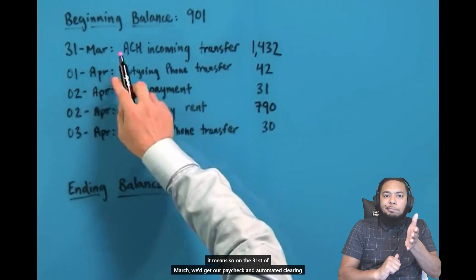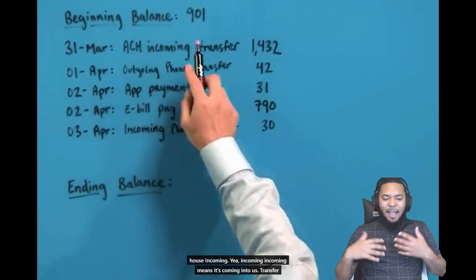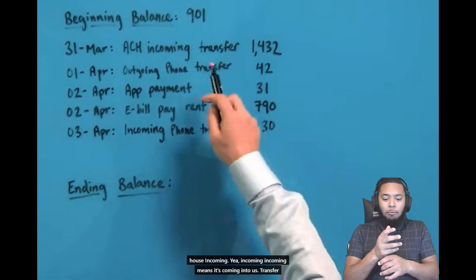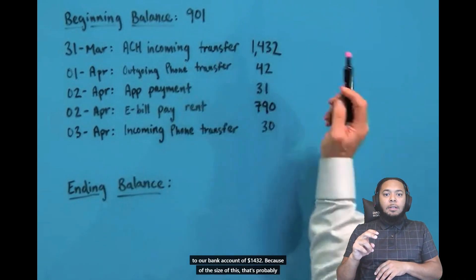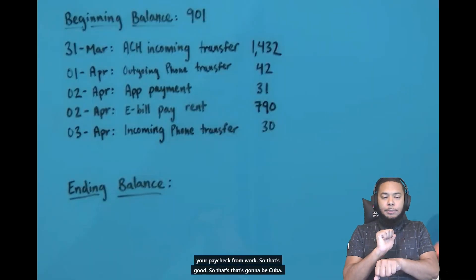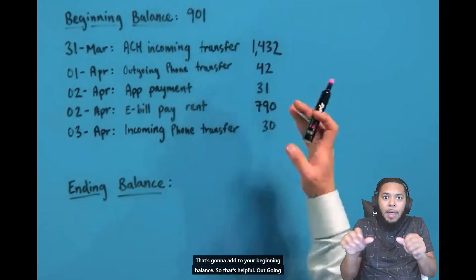So on the 31st of March, we get our paycheck and automated clearinghouse incoming. Incoming means it's coming into us. Transfer to our bank account with $1,432. Because of the size of this, that's probably your paycheck from work. So that's good. That's going to be cumulative. That's going to add to your beginning balance. So that's helpful.